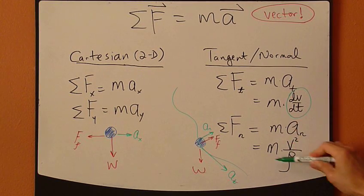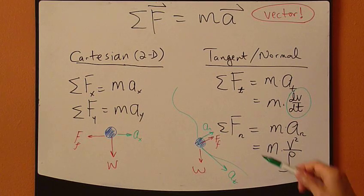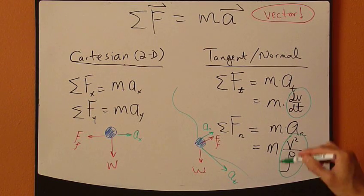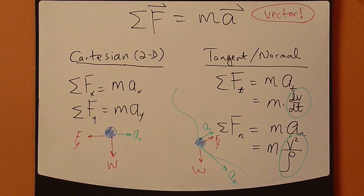And then you write the second law in a normal direction as well. And AN, and we've derived it before, is V squared over rho.